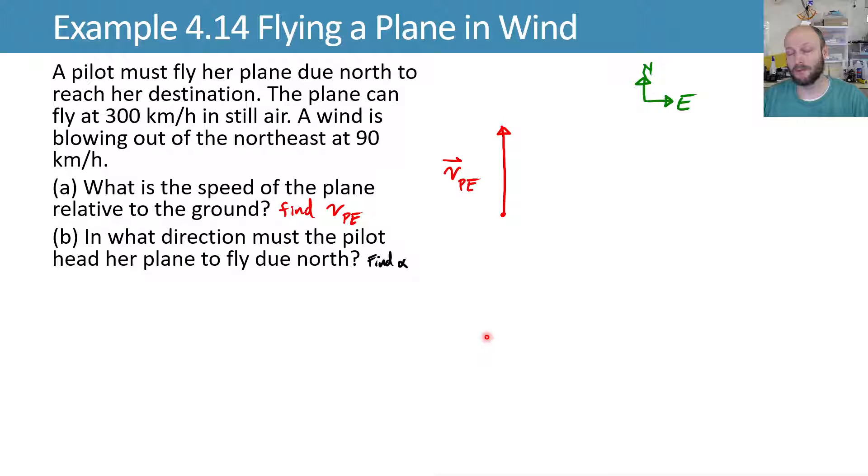We know the wind is coming out of the northeast, so it's blowing to the southwest, and we'll put that at a 45-degree angle, and the magnitude of that is 90. So that means that in order to fly, we have to head upwind a little bit, so we have to point our plane up that way somehow. We need to figure out how much that is.